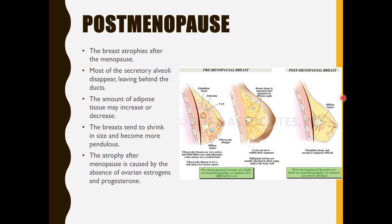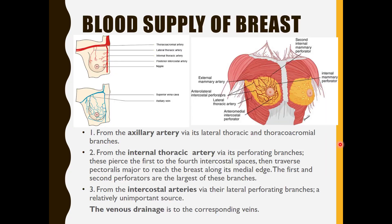After menopause, the breast atrophies. Most of the secretory alveoli disappear, leaving behind the ducts. The amount of adipose tissue may decrease or increase, and the breast tends to shrink and become more pendulous. This post-menopausal atrophy is caused by the absence of ovarian estrogen and progesterone. In this diagram, glandular tissue and stroma are replaced with fat, and the breast is more pendulous.